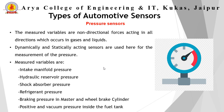Other pressure sensor variables include hydraulic reservoir pressure for systems like power steering and hydraulic brakes, shock absorber and suspension systems, refrigerant systems for air conditioning, brake pressure in master and wheel brake systems, and positive and vacuum pressure inside the fuel tank — important because fuel fumes develop due to temperature, requiring pressure monitoring.